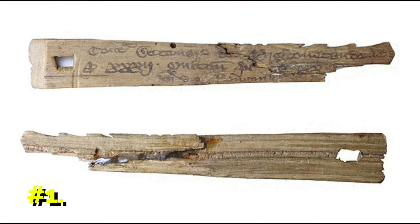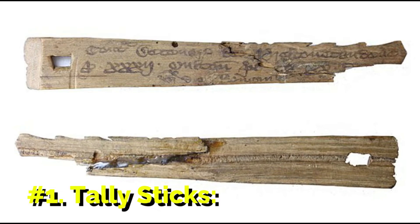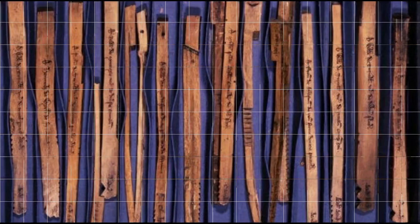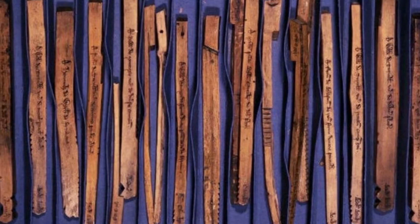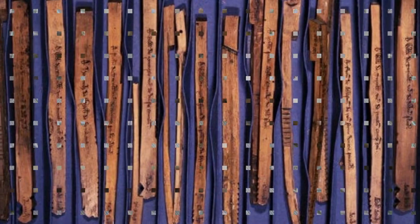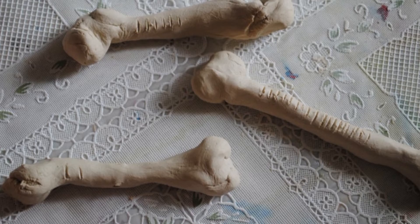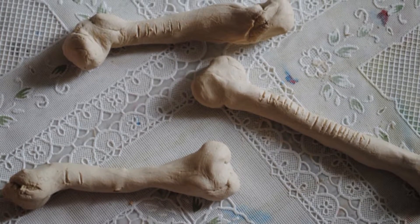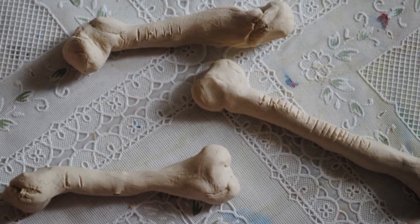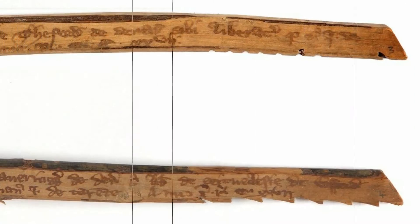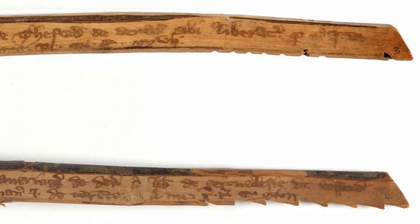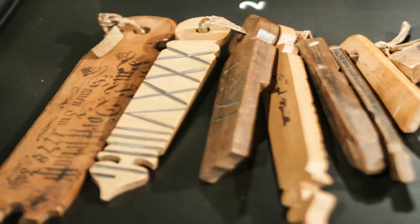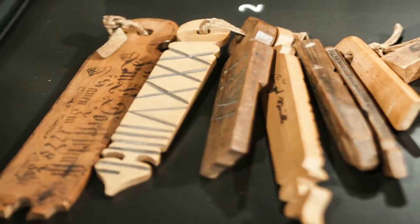Number 1: Tally sticks. A tally stick, or tally, was an ancient device for recording quantities, numbers, or messages. During the Upper Paleolithic, tally sticks first appeared as carved animal bones with notches. Tallies have been used for a variety of purposes, including messaging and scheduling, as well as currency in financial and legal transactions.